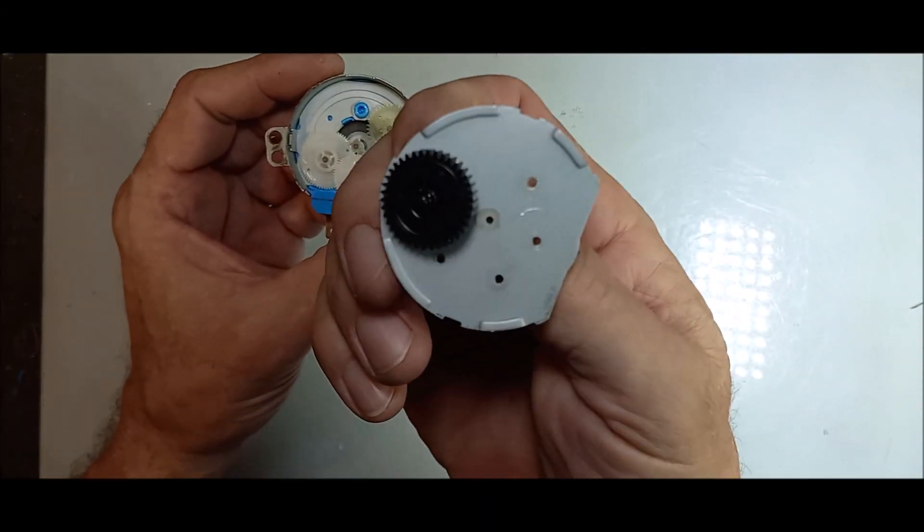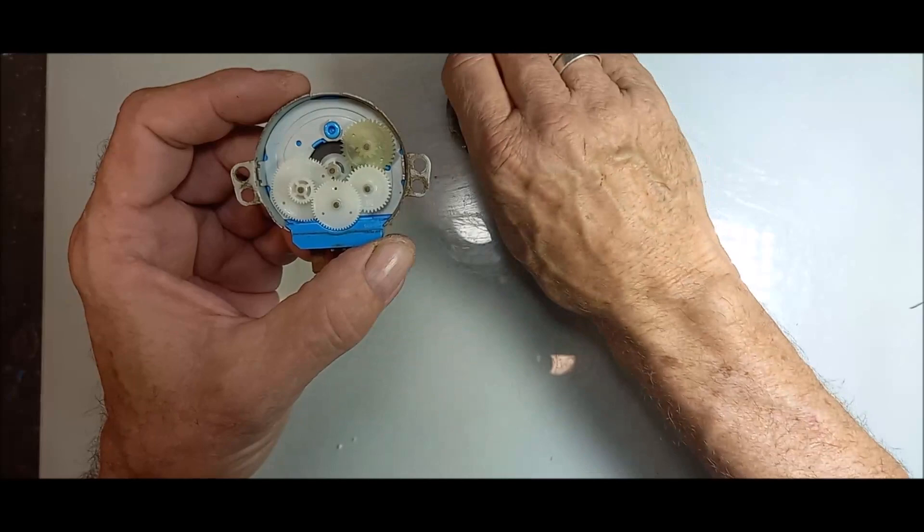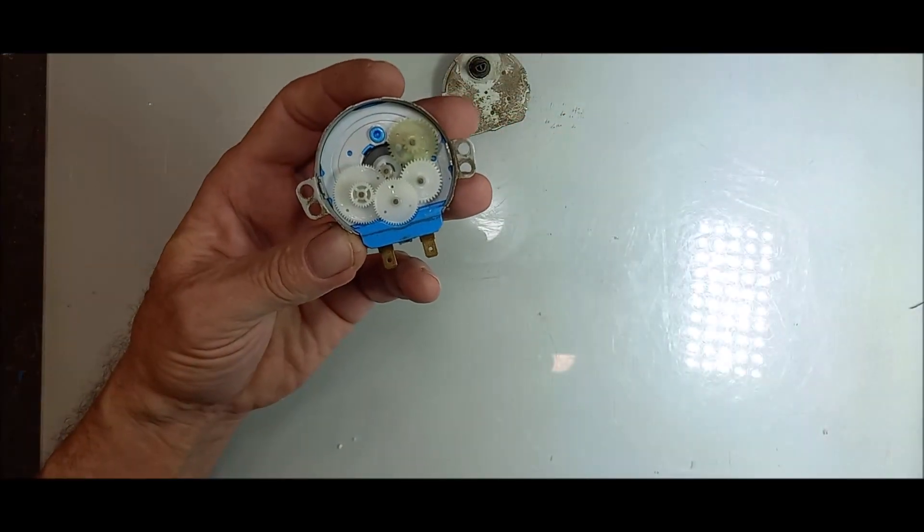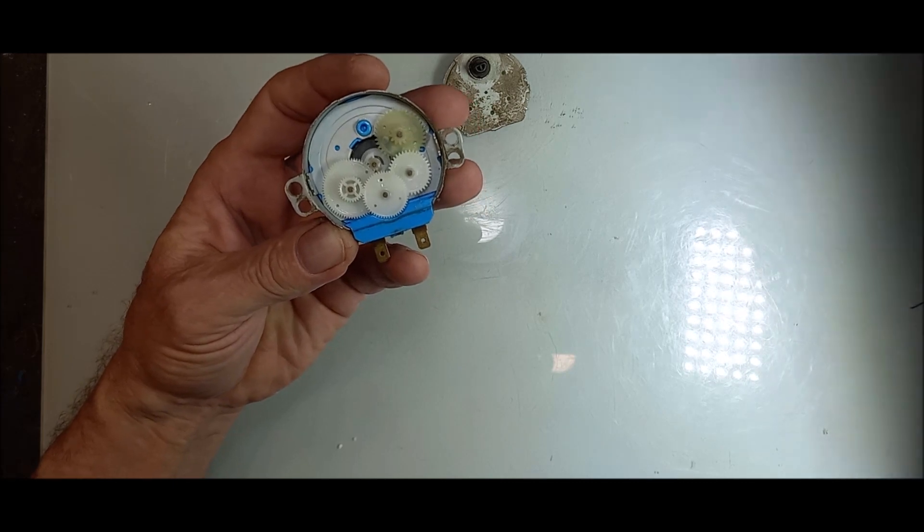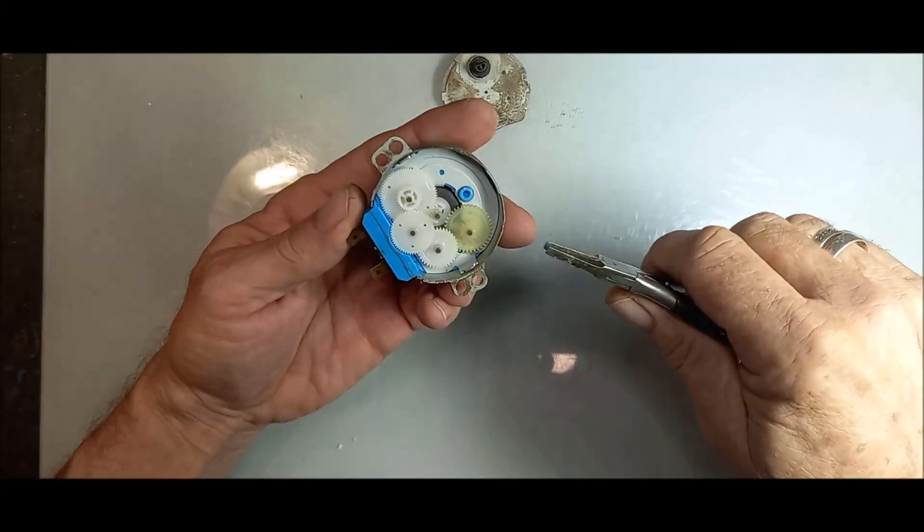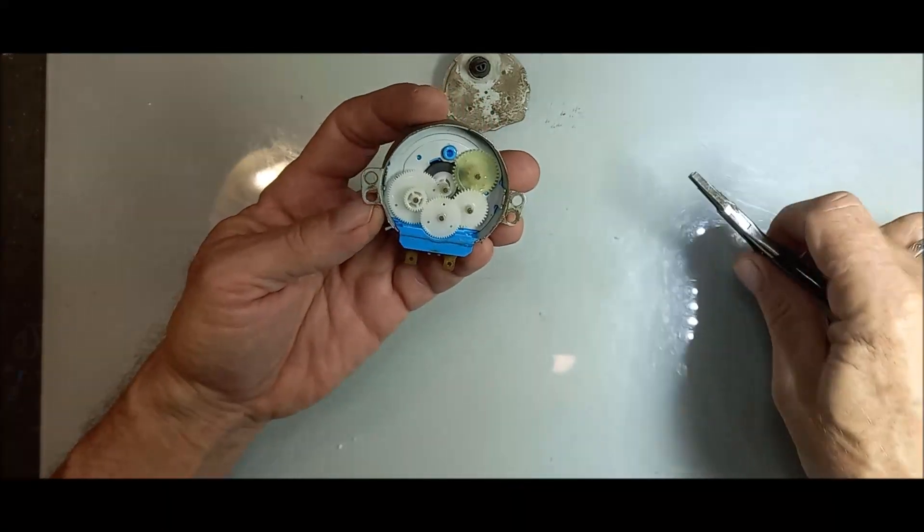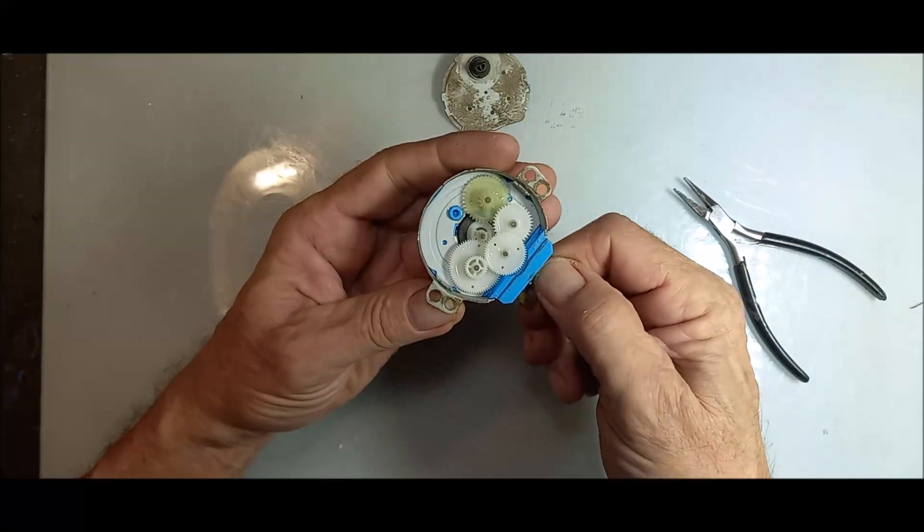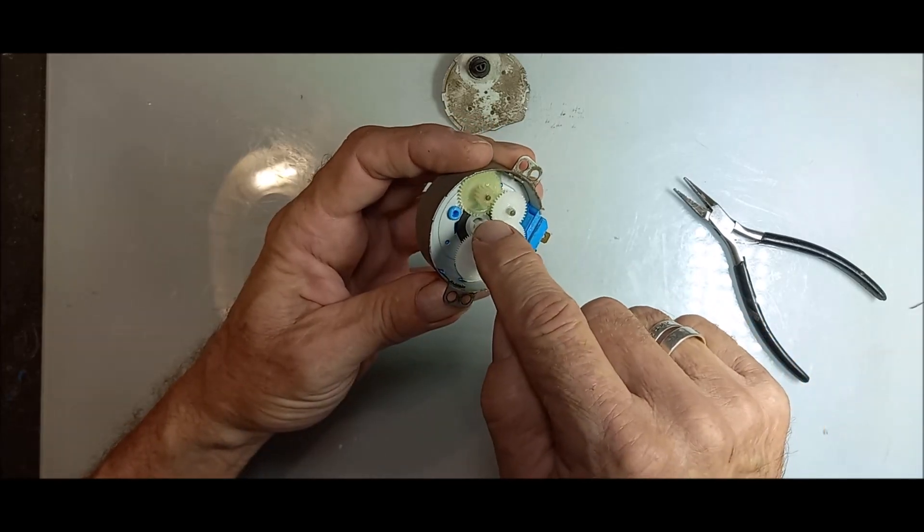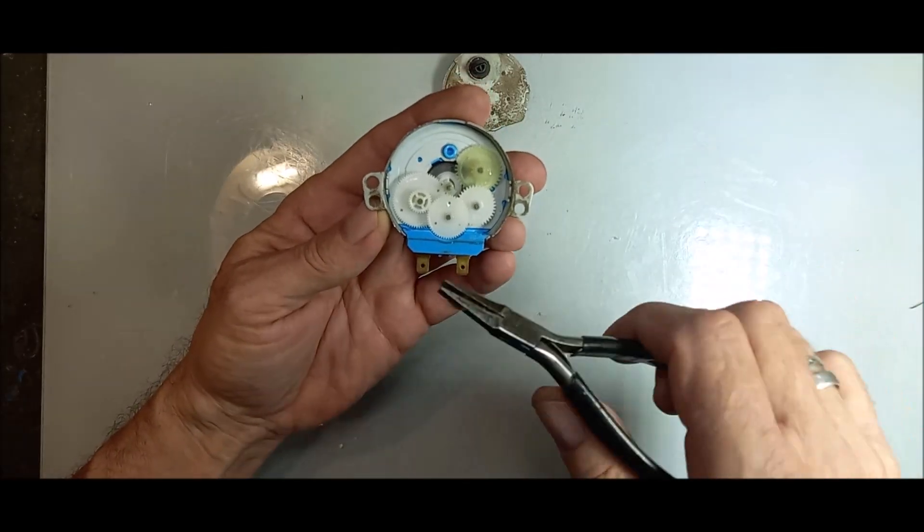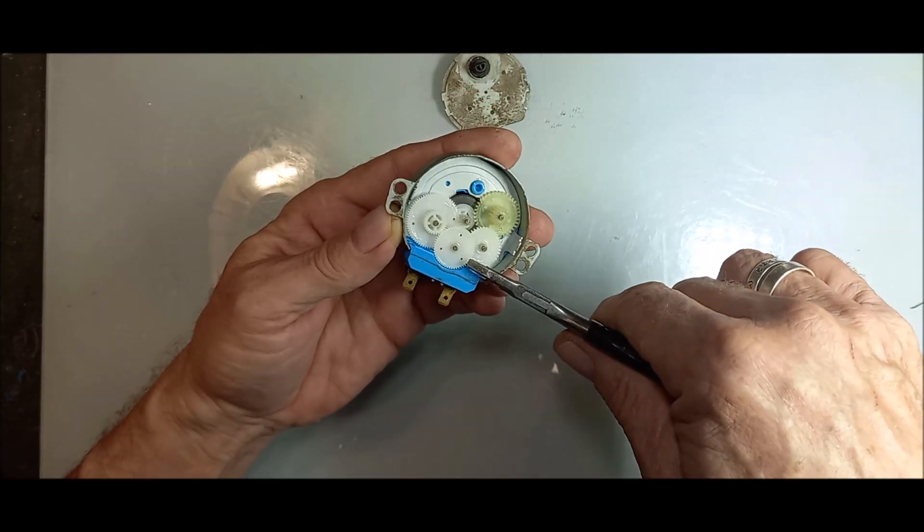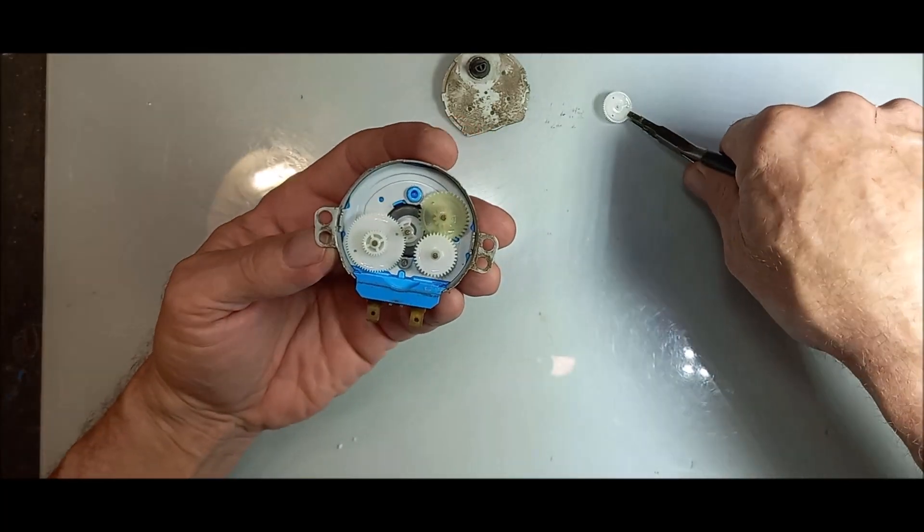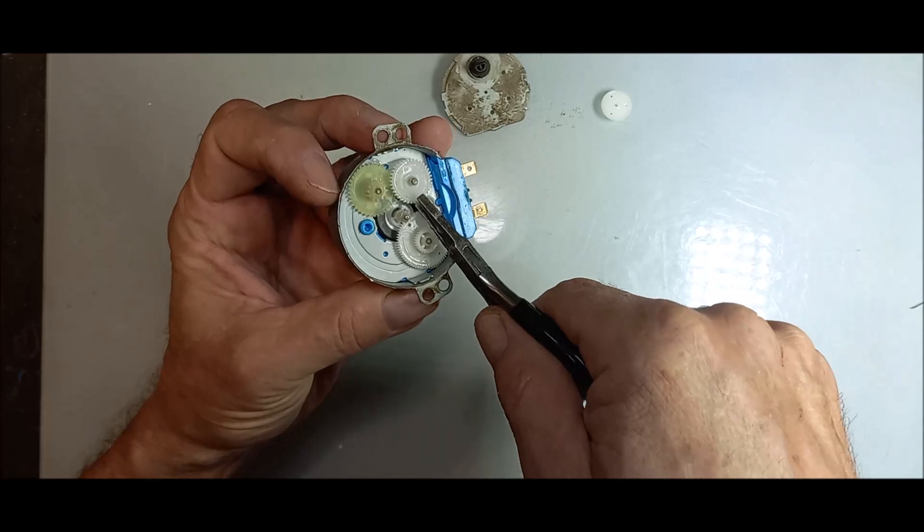So here's the gearbox underneath. Let me just get a pliers here. I think we must remove this thing. See, there's two sides in here. There's a coil underneath here and there's a little magnet. You can see there's a gear ratio here. That's why it's so strong.